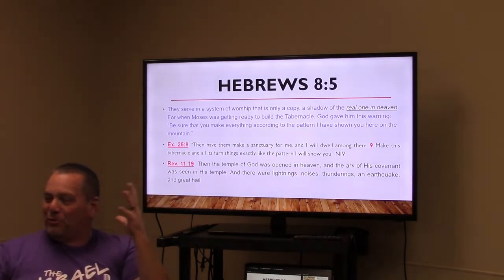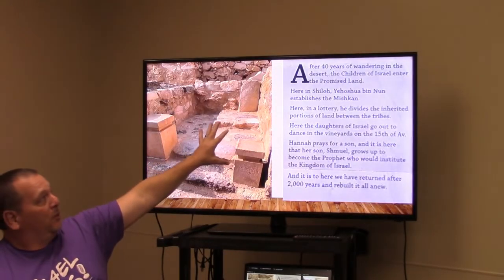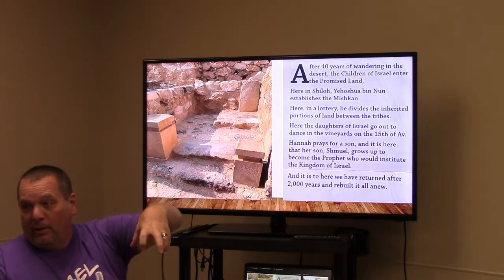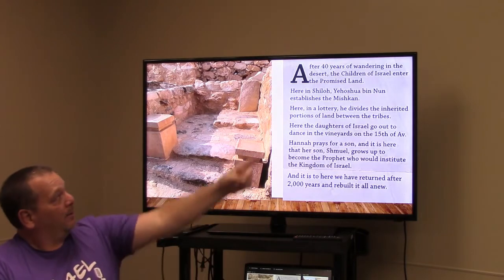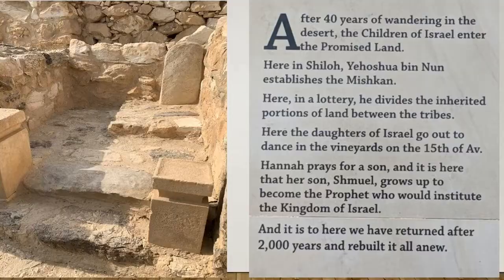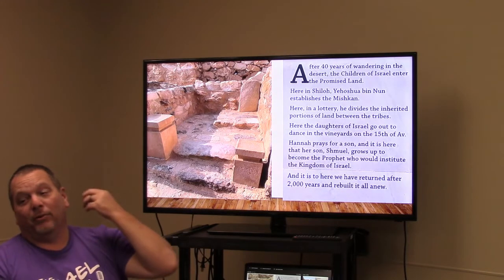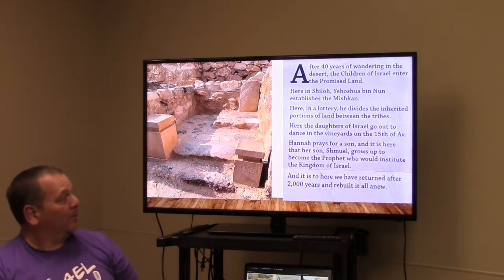This is an actual picture taken in Shiloh, which was the last known location of the tabernacle before the temple was built. When Solomon's temple was completed, everything from the tabernacle was moved into it. In Shiloh, Joshua built the mishkan. It's also where Hannah prayed for a son and received Samuel, the prophet who later anointed both Saul and David.